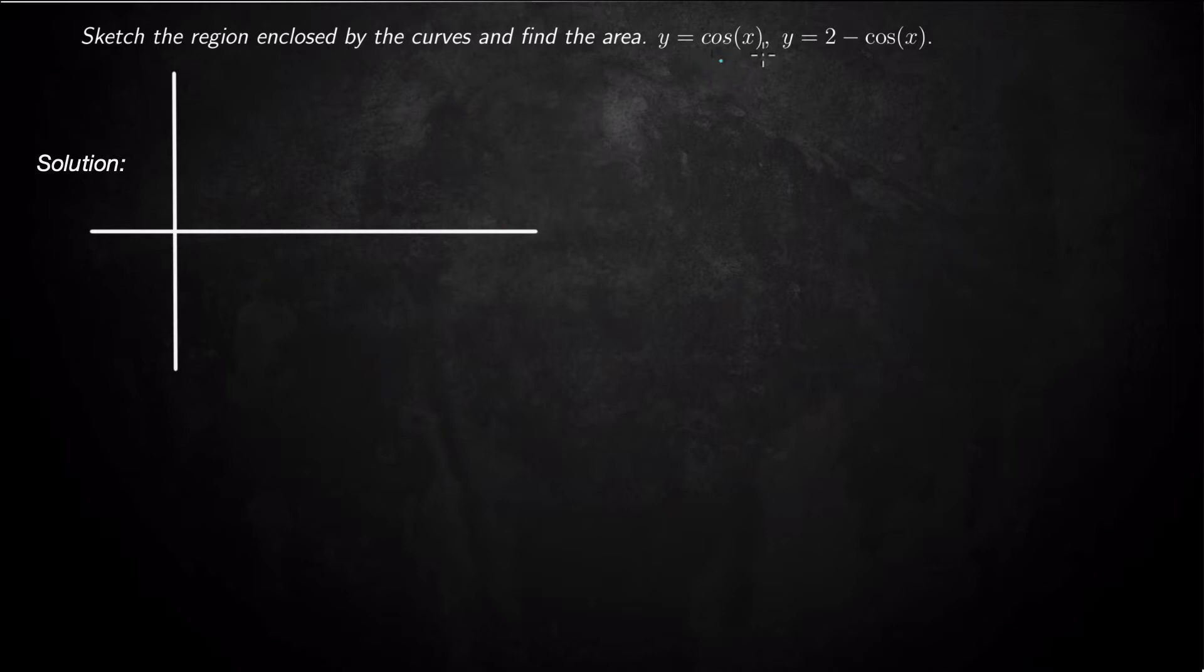Here we have the first curve, y equals cosine x, and the second curve, y equals 2 minus cosine x. We want to sketch the region and then find the area enclosed by the region.